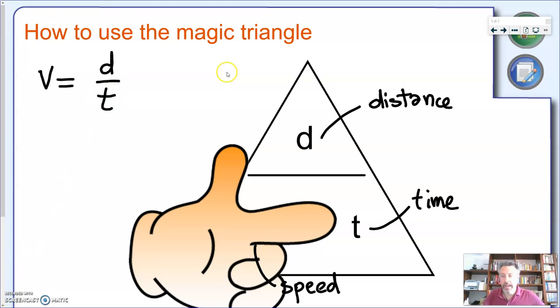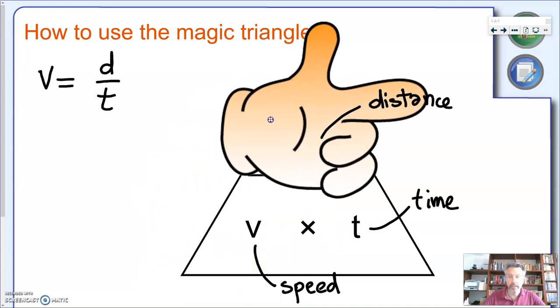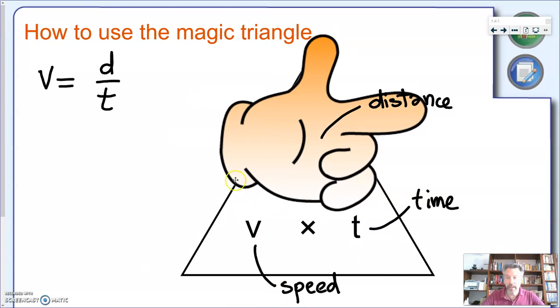But let's imagine now I know my speed. I know for how much time I've been traveling. I want to calculate the distance I covered. So I'm going to take my hand again and drag it to cover the distance. And what I'm left with is this formula here. Distance given by speed times the time. So let's write that down. Distance equals to speed times the time.